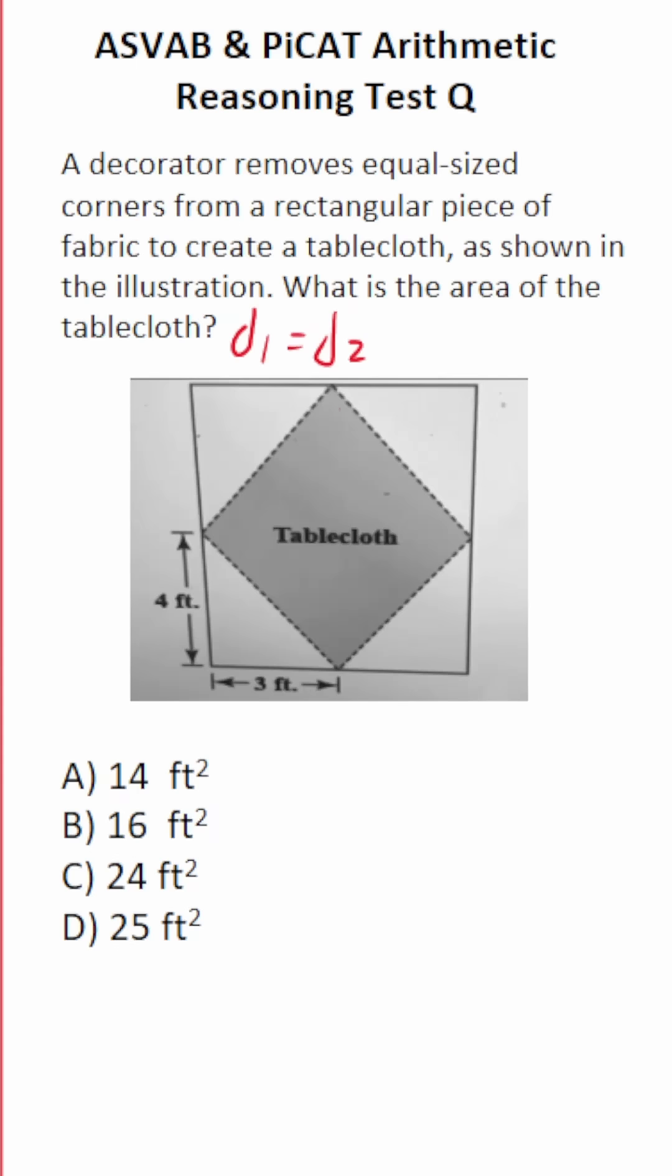So let's quickly check the length of our diagonals. Here's one diagonal. You can see it's going to be 3 plus 3. We have 3 here and 3 here. So diagonal 1 is 3 plus 3 or 6. Here's our second diagonal. You can see it's 4 plus 4. So diagonal 2 is 8.